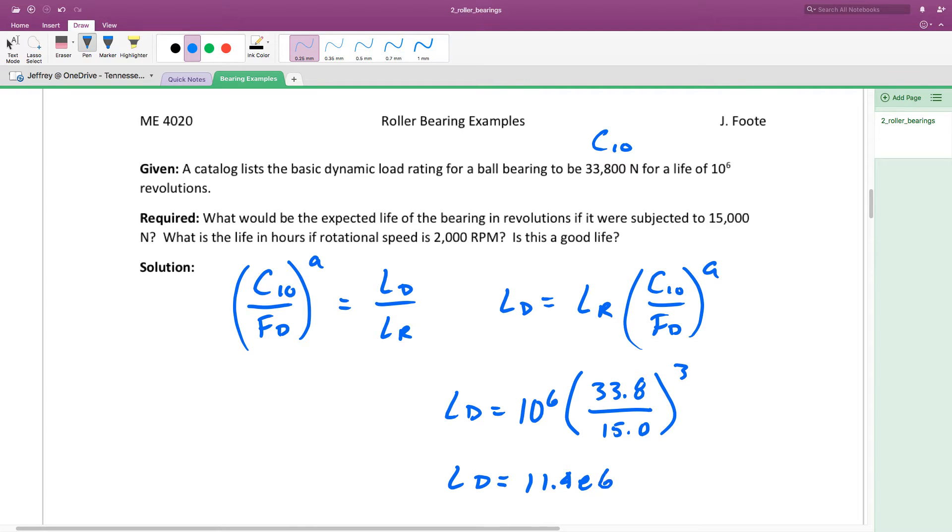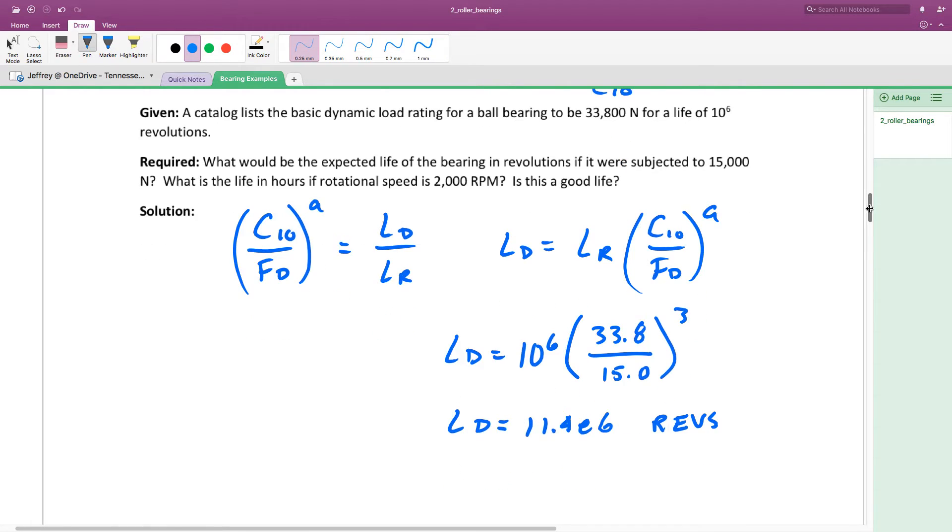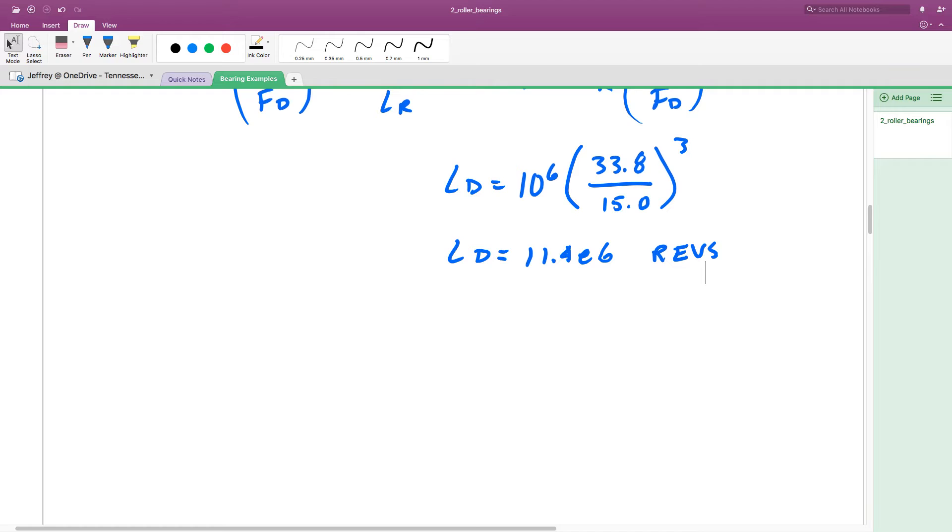To convert that into hours, just divide by the rotational speed and multiply by 60. That gives me 95.3 hours, which divided by 24 gives about 3.97 days.